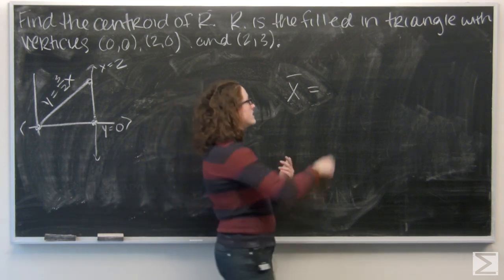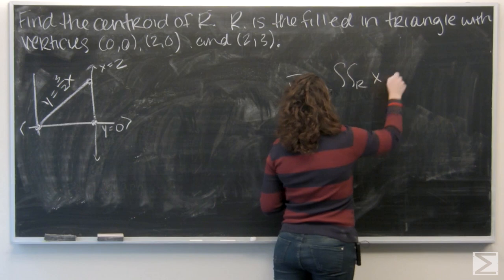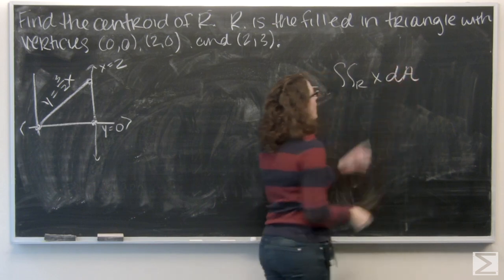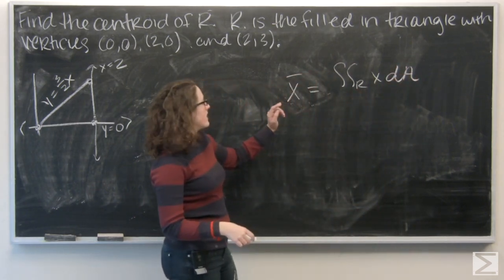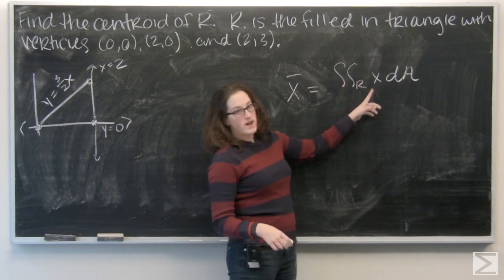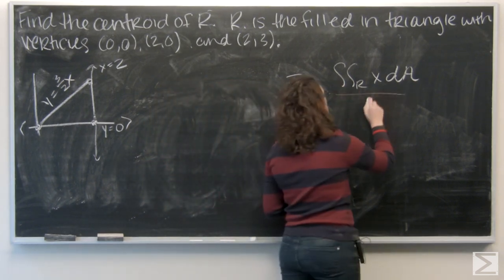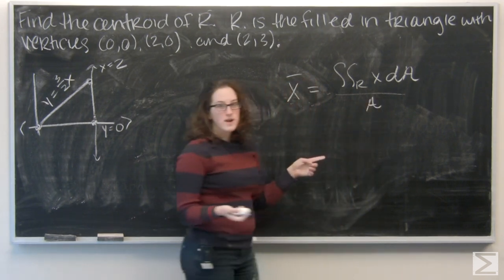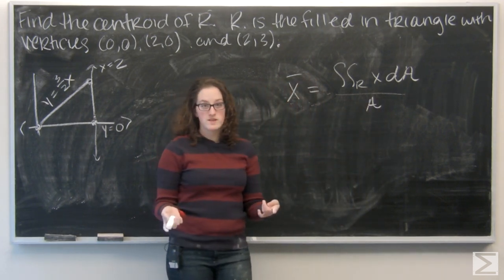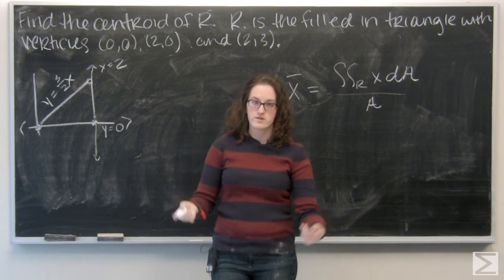I have a double integral over the region of the coordinate. So if I'm finding x bar, I integrate x. If I'm finding y bar, I integrate y. And then I divide that by area. So that's something we're missing is the area. Let's go ahead and calculate the area of this triangle.